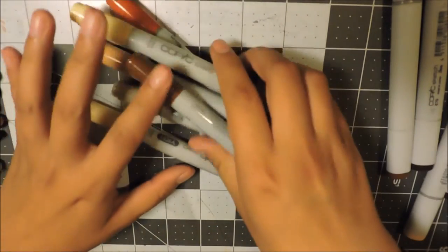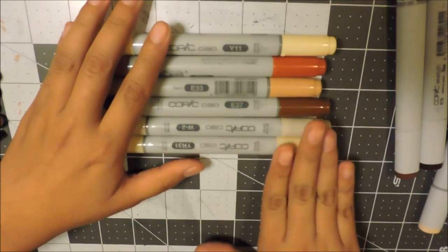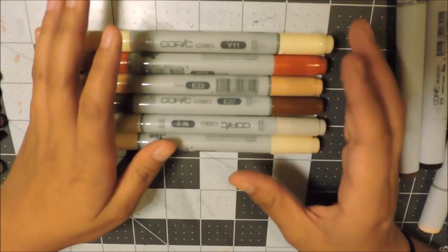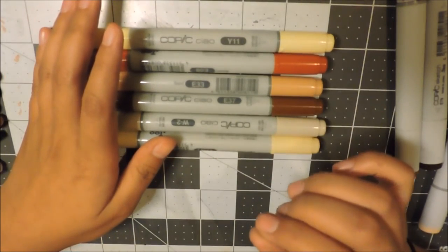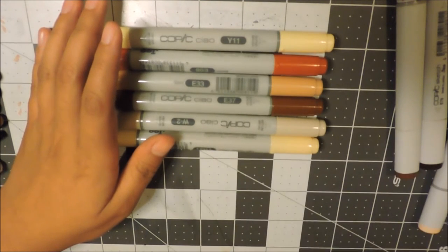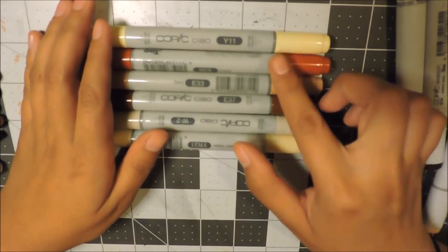Starting off with the Copic Sketch markers, this one is a set of six markers and this is I believe the hair set.